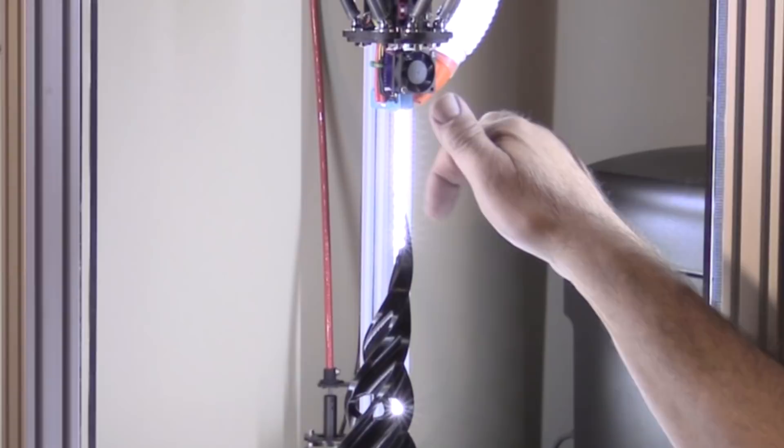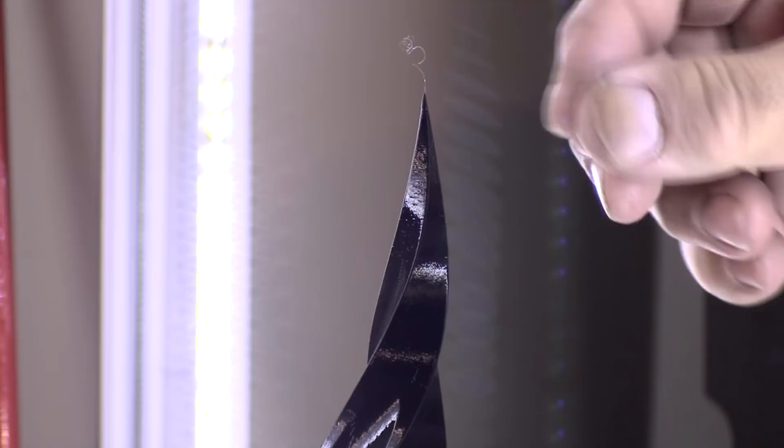And look at how smooth this came out up in here, up in this little tiny area, right up to this nice fine little point. I did nothing to this print when I took it off the tray. This is how well this machine prints.